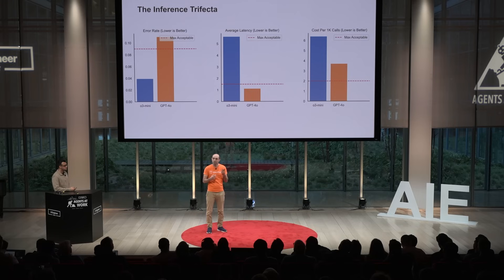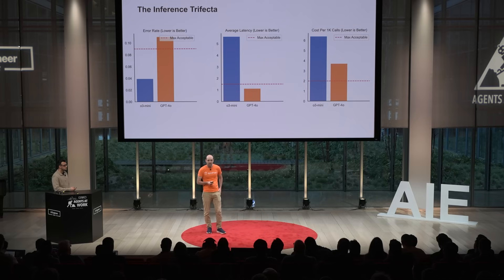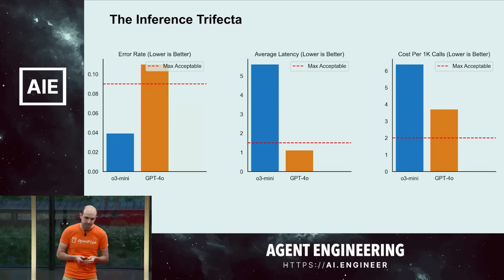Looking at this, you may see there's a problem: of the two models we're comparing, none of them actually meet all three requirements we need to deploy in production. GPT-4o on both the error rate and the cost, we're not quite there. And O3-mini on cost, but especially on latency, is just not going to work for what we need.